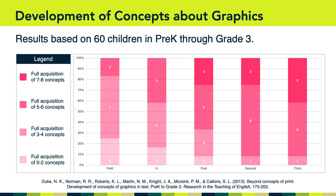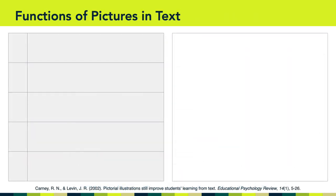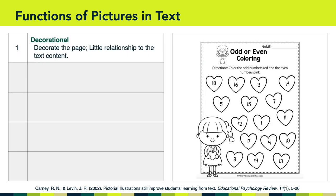This brings us to the idea of the different functions pictures can have in relation to text. One of those functions is decorational — simply the idea of decorating the page in a way that the graphics have little relationship to the text content. You can see here on the right an example of a children's worksheet called 'Odd or Even Coloring.' The directions say, 'color the odd numbers red and the even numbers pink.' As you can see, the hearts and pictures of the children are simply decorational because hearts have no relationship to odd or even numbers — they're simply there to decorate the page and make it more interesting visually.